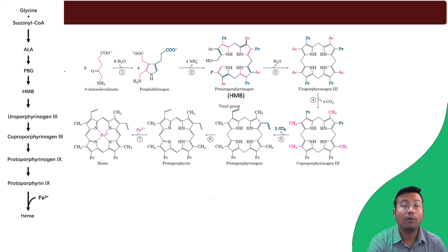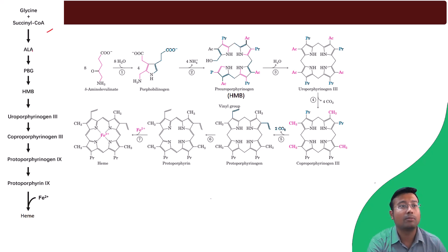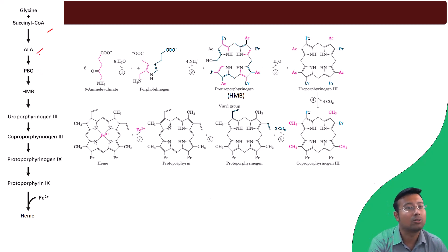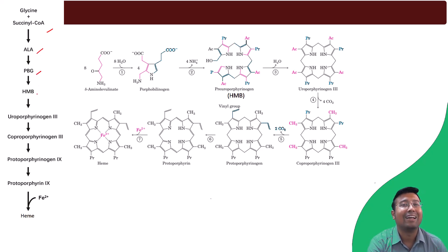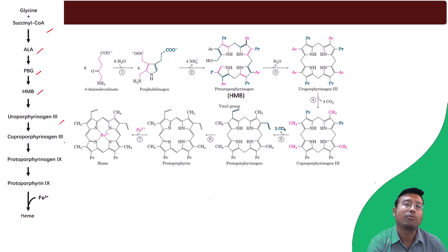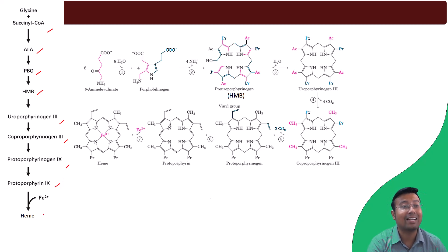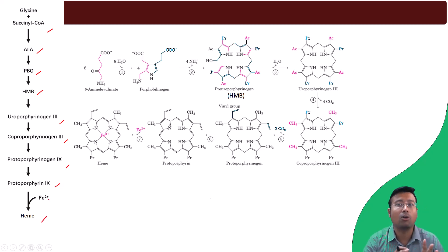So, succinyl coenzyme A and glycine unite to form delta-aminolevulinic acid, also known as ALA. Then it forms porphobilinogen, hydroxymethylbilane, uroporphyrinogen III, coproporphyrinogen III, protoporphyrinogen IX, protoporphyrin IX, and heme — so many products!